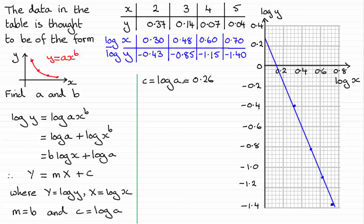And to get the value of a, I just anti-log both sides. This is to the base 10, so a will be equal to 10 to the power 0.26. And if you work that out, you should find you end up with 1.8 to one decimal place.